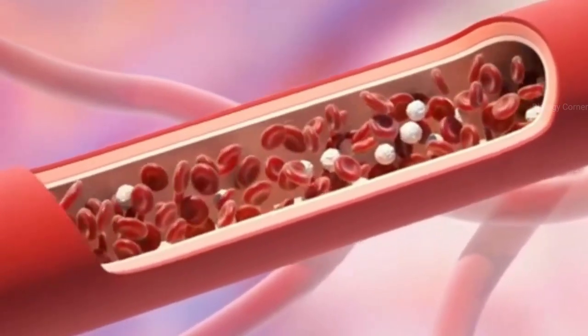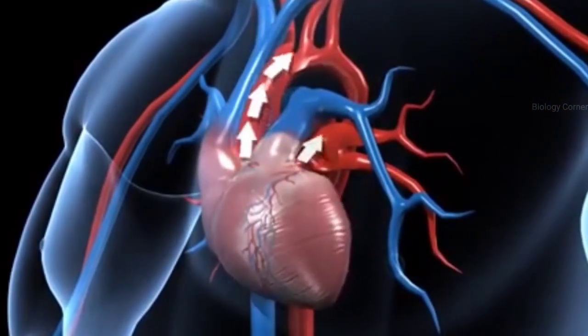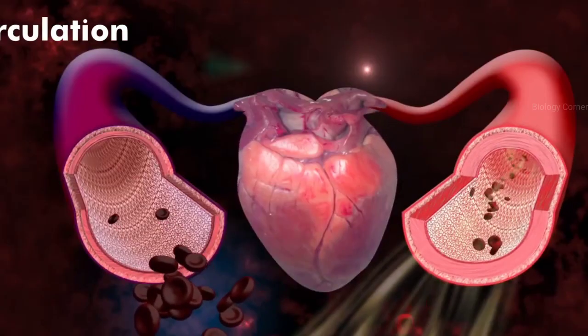This circulation in which oxygenated blood from the heart circulates throughout our body and then deoxygenated blood is brought back to the heart is called systemic circulation.